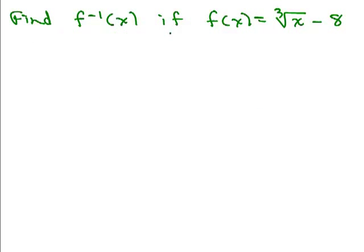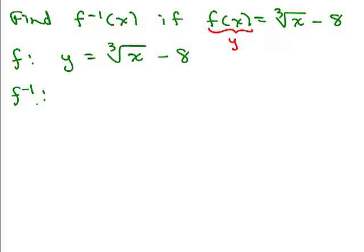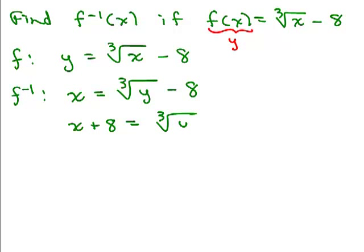Here's one for you to try: find f inverse of x if f of x equals the cube root of x minus 8. Try it on your own first. We start by replacing f of x with y: y equals the cube root of x minus 8. For f inverse, we exchange x and y, so x equals the cube root of y minus 8. Now we solve for y by adding 8 to both sides: x plus 8 equals the cube root of y.